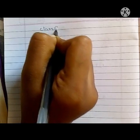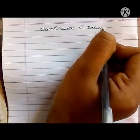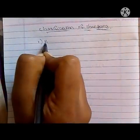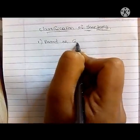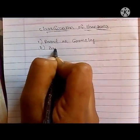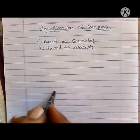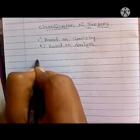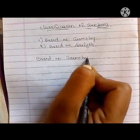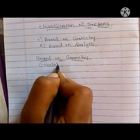Now let's look at the classification of structures. Structures can be classified in two ways: first based on geometry, and second based on analysis. Based on geometry, structures can be classified into three types: the first one is skeletal structures, the second one is surface structures, and the third one is solid structures.